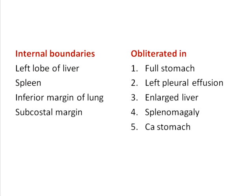The internal boundaries of Traube's space are: the left lobe of the liver on the right side, the spleen on the left side, the inferior margin of the lung above, and the subcostal margin below.